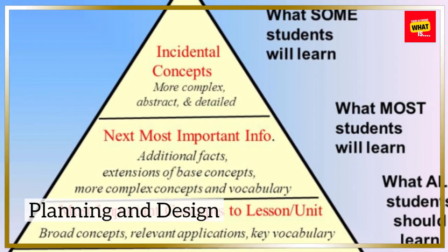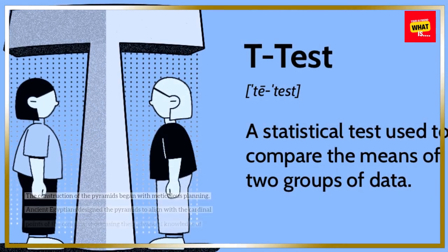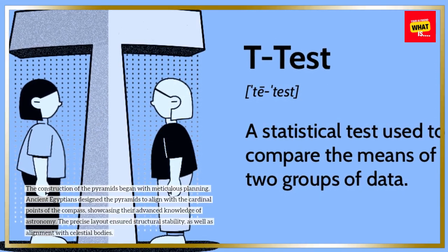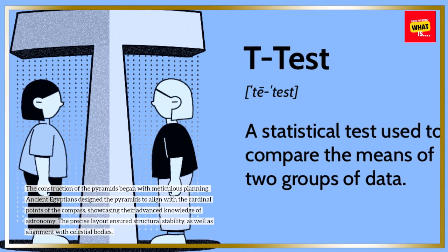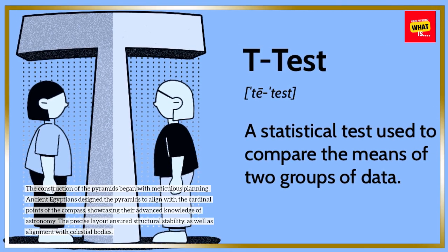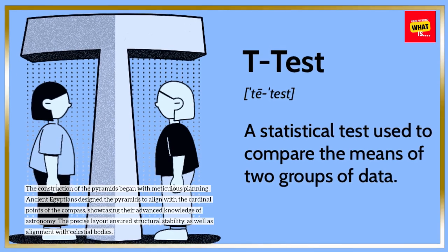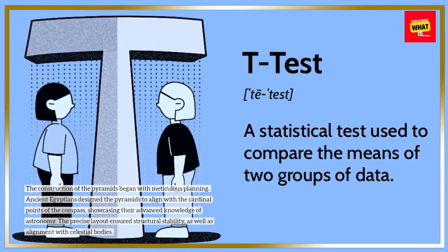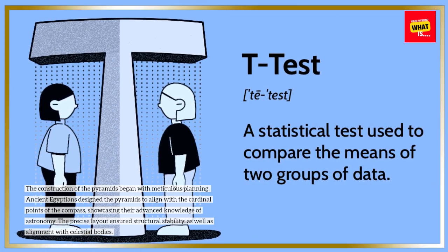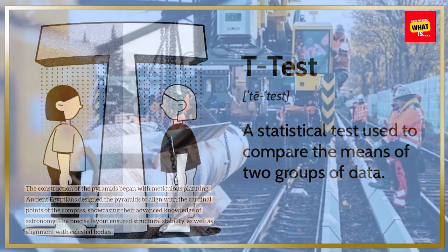The construction of the pyramids began with meticulous planning. Ancient Egyptians designed the pyramids to align with the cardinal points of the compass, showcasing their advanced knowledge of astronomy. The precise layout ensured structural stability, as well as alignment with celestial bodies.